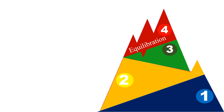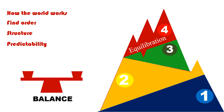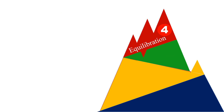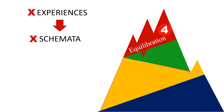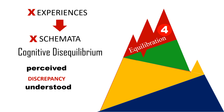Equilibration. Piaget believed that people have the natural need to understand how the world works and to find order, structure, and predictability in their life. Equilibration is achieving proper balance between assimilation and accommodation. When our experiences do not match our schemata or cognitive structures, we experience cognitive disequilibrium. This means there is a discrepancy between what is perceived and what is understood. We then exert effort through assimilation and accommodation to establish equilibrium once more.